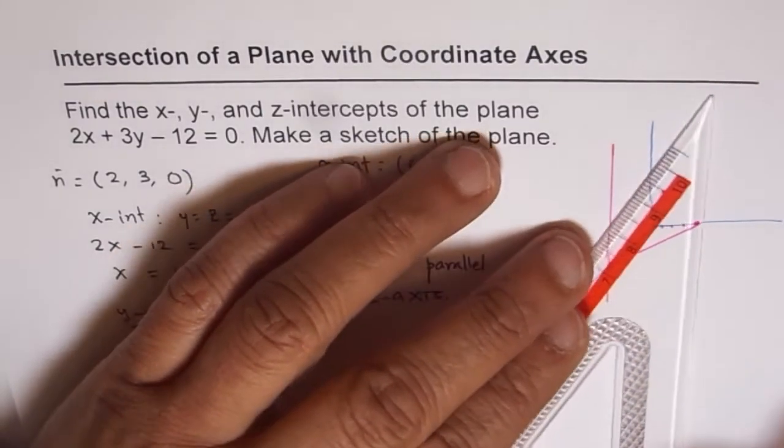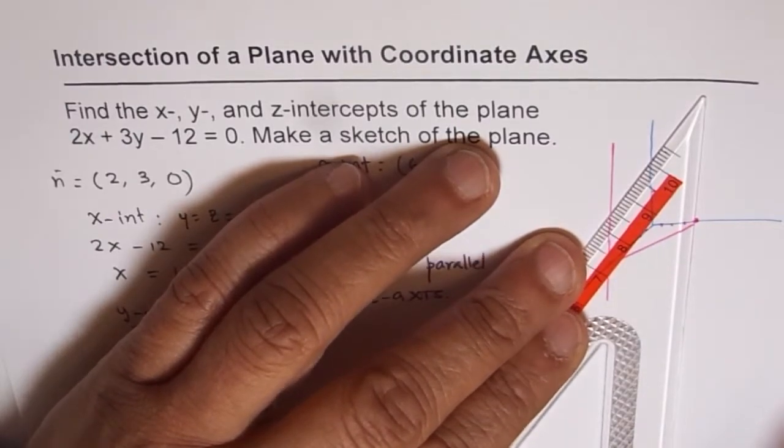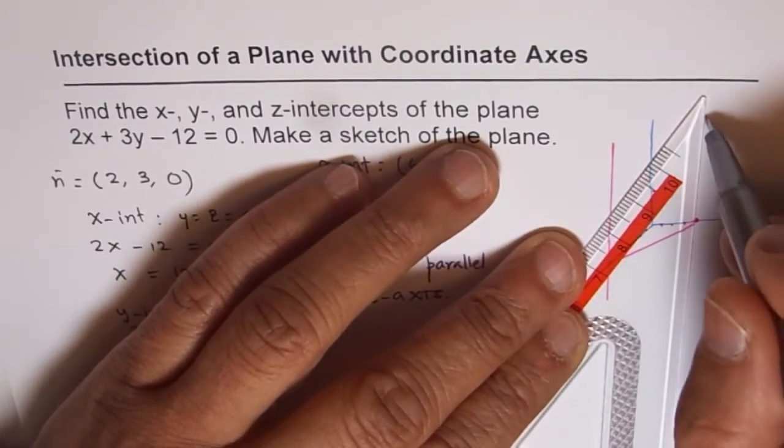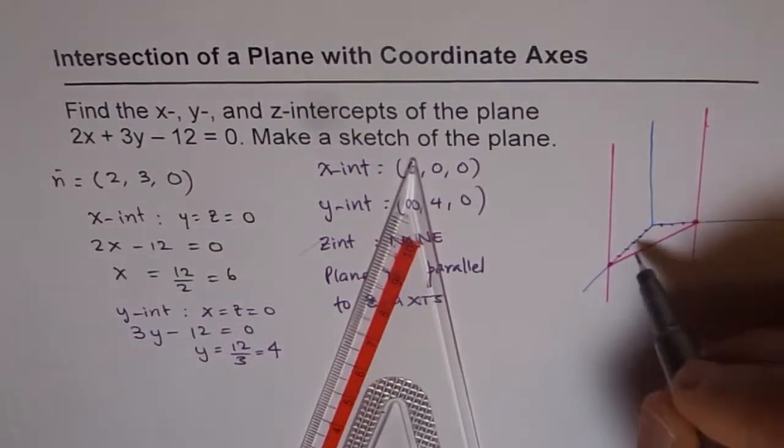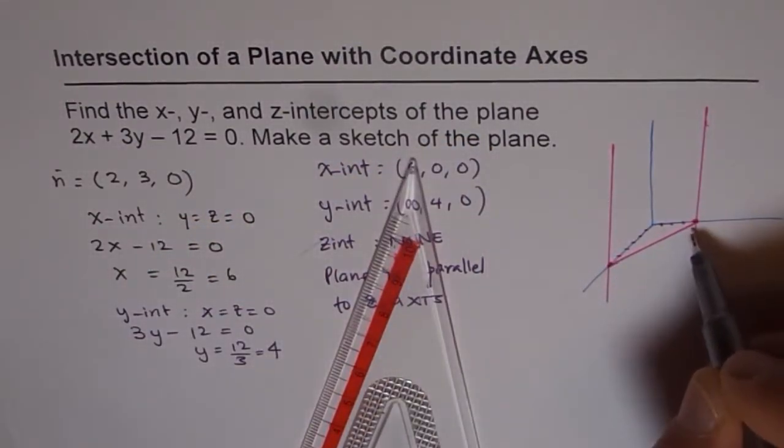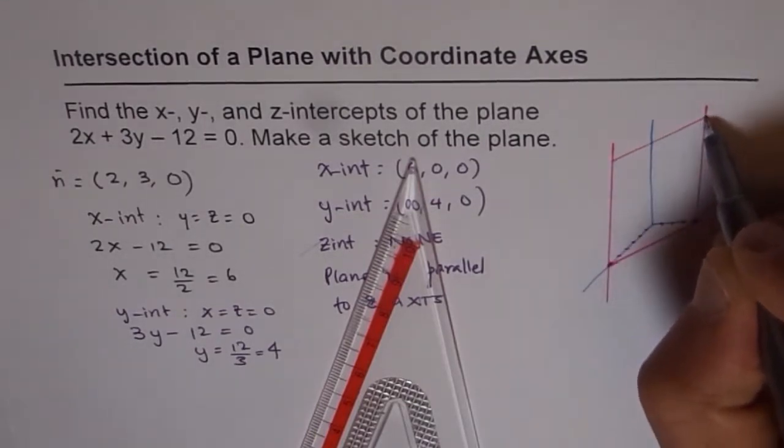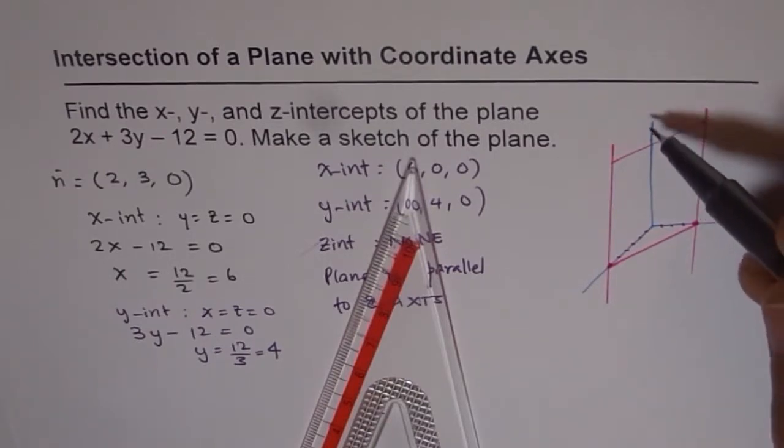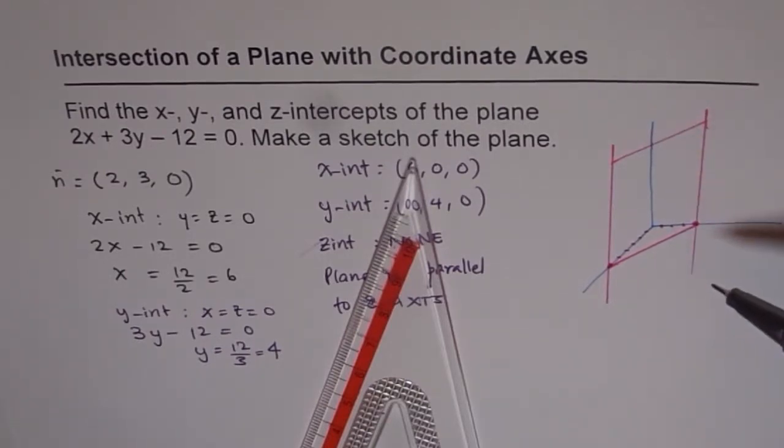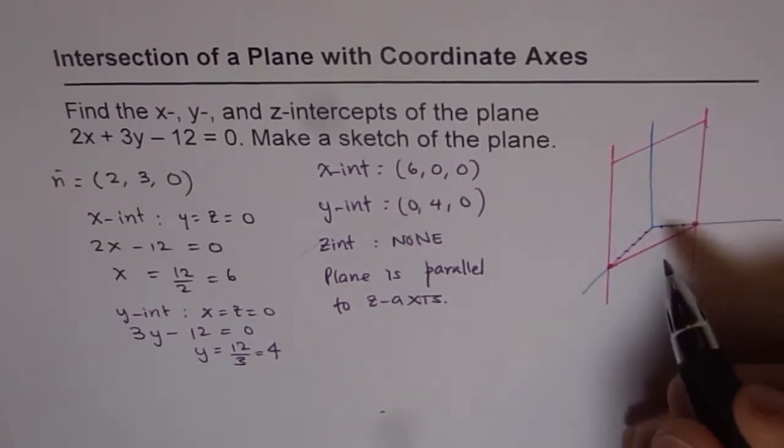That becomes the plane which is parallel to z-axis and actually it will cross the x-y plane in the line shown. So this line here is the line through which it crosses the x-y plane. The plane extends in all directions as shown and it's like moving up parallel to z-axis.